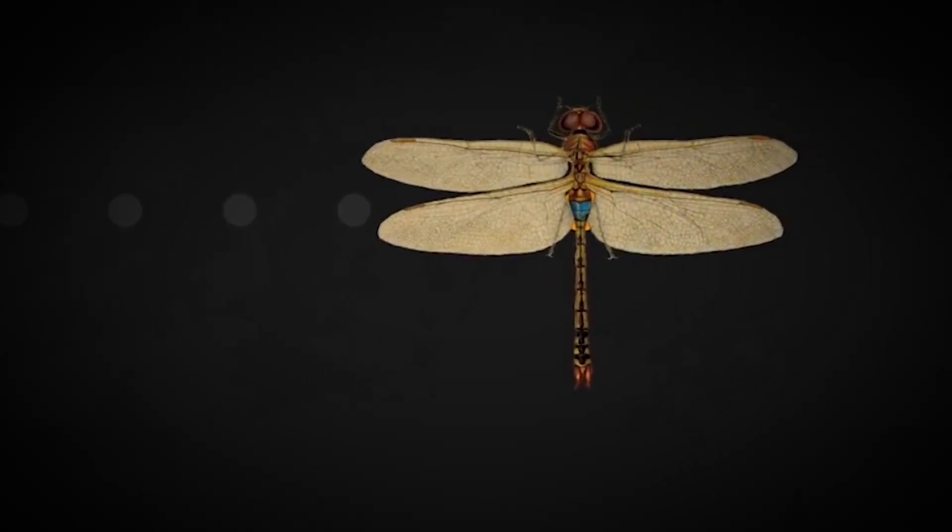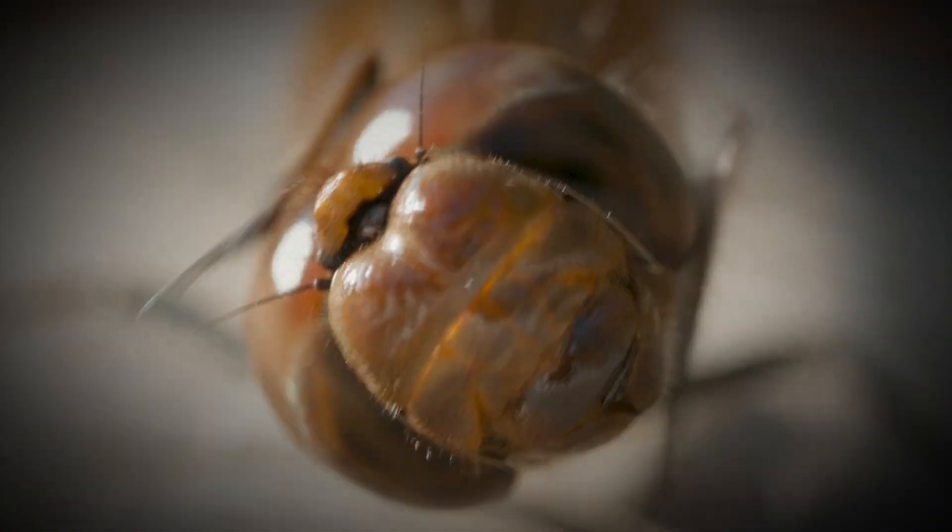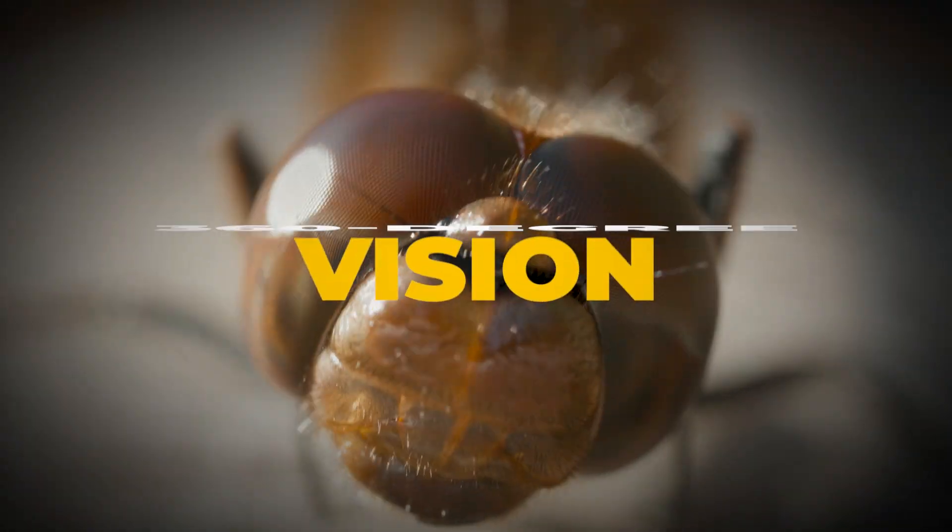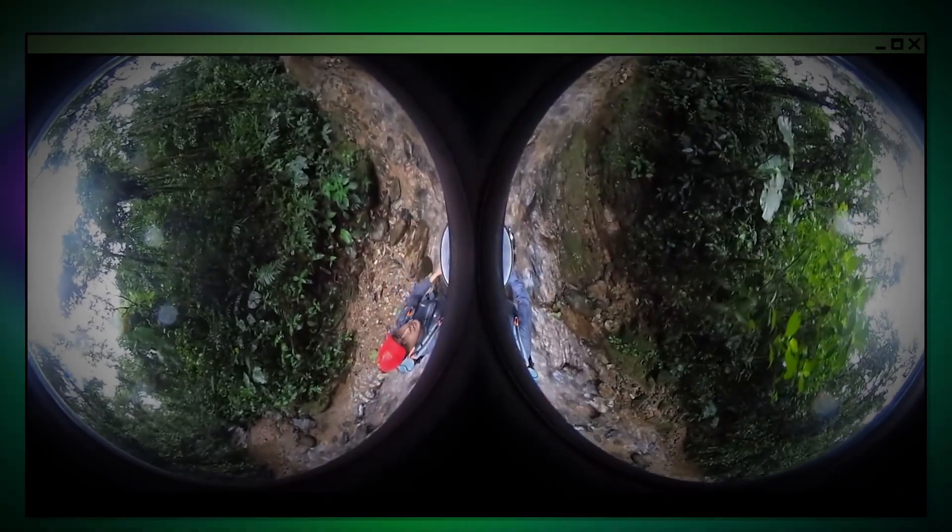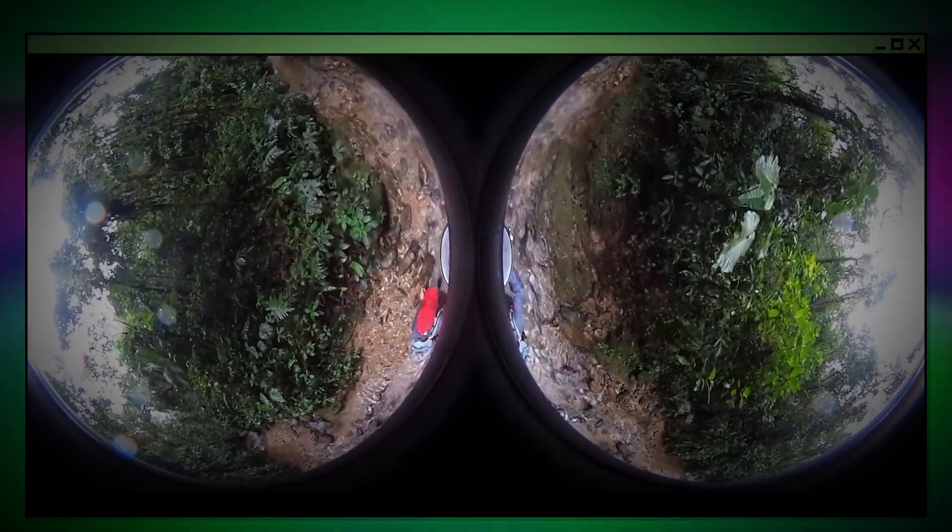And get this, dragonflies also have some pretty amazing eyesight. They have compound eyes made up of thousands of tiny lenses that give them almost 360-degree vision. Plus, they can see in color and have excellent depth perception, making them even more deadly hunters.